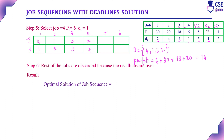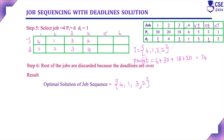The optimal solution for the job sequencing problem is: job number 4 first, job number 1 next, job number 3 next, and job number 2 last. These 4 jobs can be assigned to the computer for execution since they can all be completed within their deadlines. The total profit earned is 74. This is the solution for the given job sequencing problem.